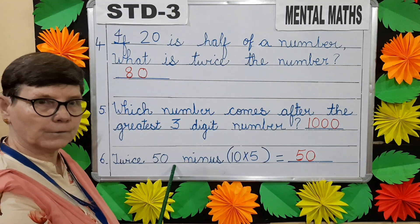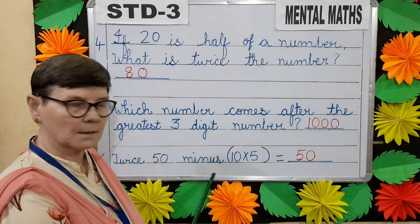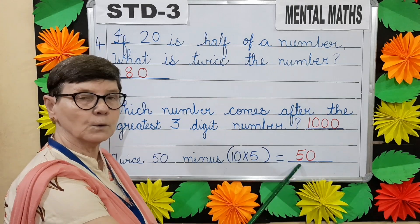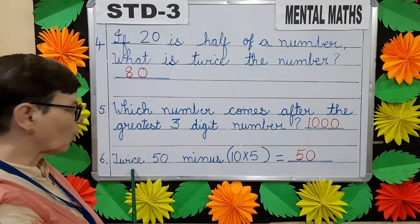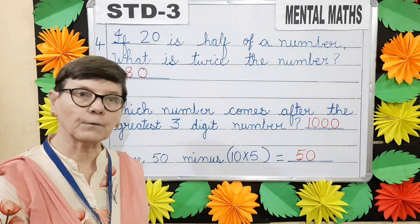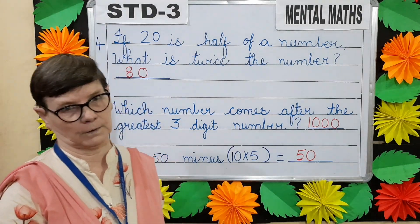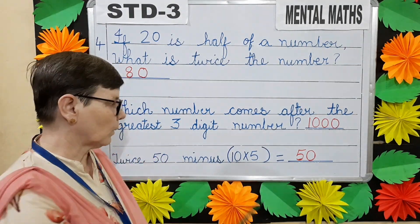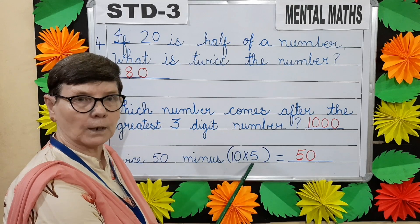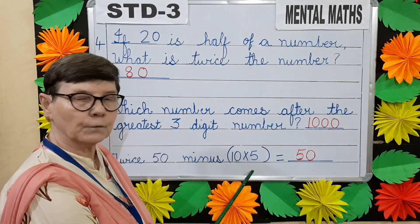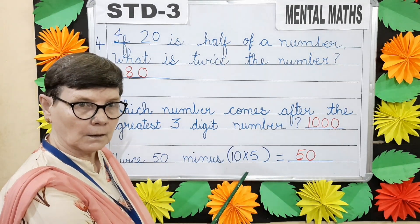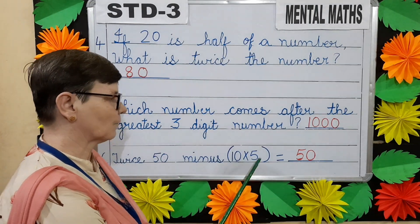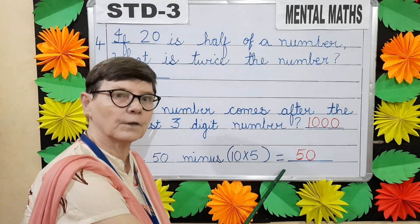Question number six. Twice fifty minus ten into five equals dash. Twice fifty means fifty plus fifty will give you one hundred. Now we will multiply these two numbers: ten into five will give you fifty. So one hundred minus fifty will give you fifty.